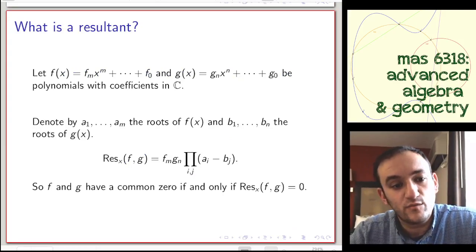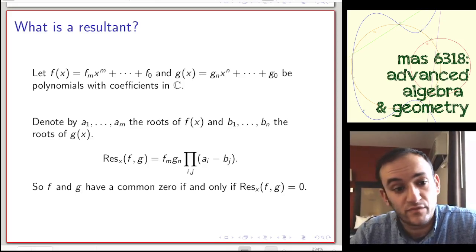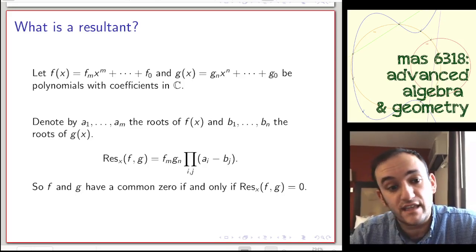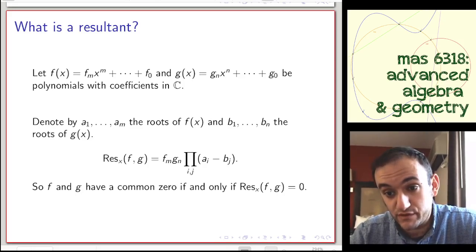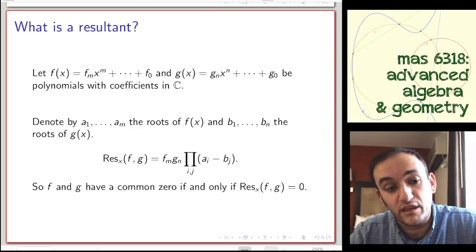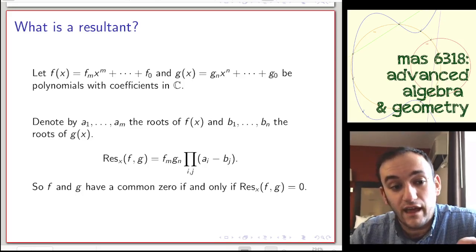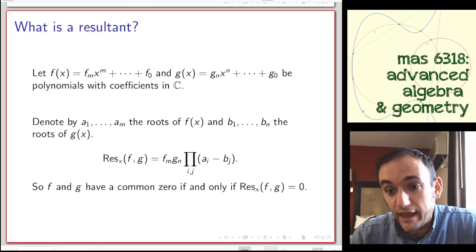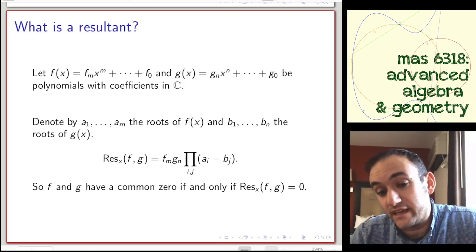So what is a resultant? Let's assume we have two polynomials f(x) and g(x) with coefficients in the complex numbers. By the fundamental theorem of algebra, each of these polynomials has degree-many complex roots counted up to multiplicity. If we denote those roots by a_1 through a_m and b_1 through b_n, then the resultant is what you get when you multiply the leading coefficients of both polynomials by the differences between any pair of a root of f and a root of g. If any b_j equals any a_i, this whole product is zero.